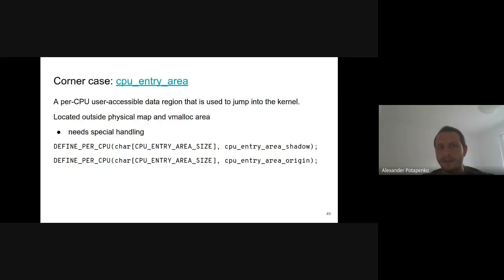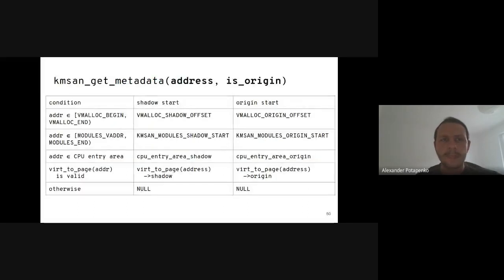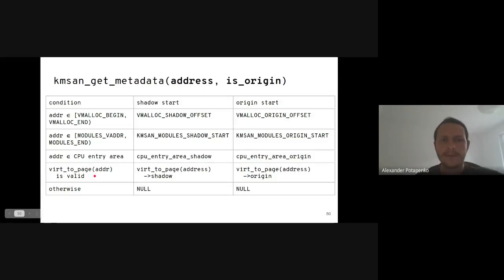Another corner case is the CPU entry area — a per-CPU user-accessible data region used to jump into the kernel. It's located outside the physical map and outside the vmalloc area, so it needs special handling: we create two per-CPU buffers for its shadow and origins. The core function that translates kernel addresses is kmsan_get_metadata. It handles all possible cases for an address and returns its shadow or origin depending on the is_origin parameter. For invalid addresses, the function returns null.